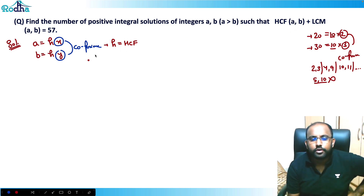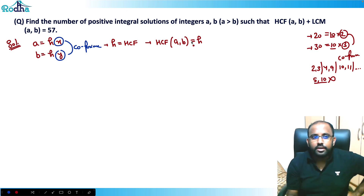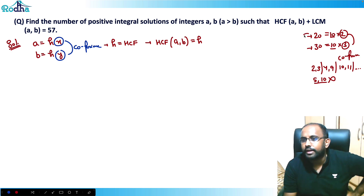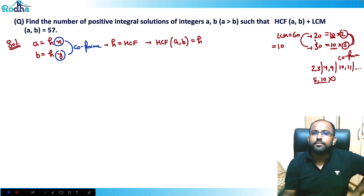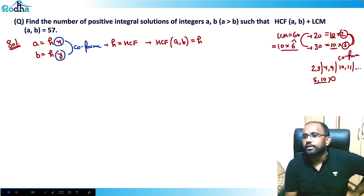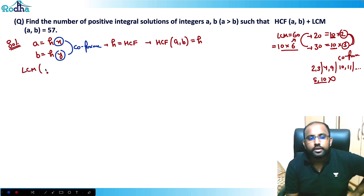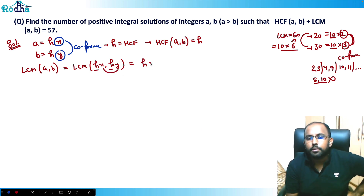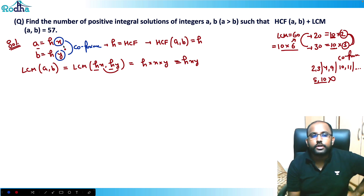The HCF of a and b is h. For the LCM: taking LCM of hx and hy — since h is common and x, y are co-prime, we multiply x and y, giving LCM = hxy. For example, LCM(20, 30): take 10 common, then 2 and 3 are co-prime, so 10×6 = 60.